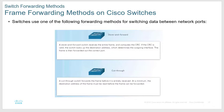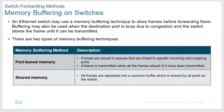Cut-through is very fast but if the frame is damaged you're forwarding damaged frames and will have to resend them. Cisco uses store-and-forward: the switch waits for the entire frame to come in, then runs a cyclic redundancy check (CRC) to make sure the frame has not been corrupted. If the frame is good, it's forwarded. So cut-through makes decisions immediately while store-and-forward waits for the whole frame and checks integrity first.